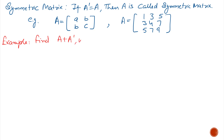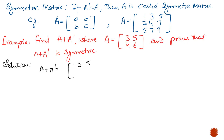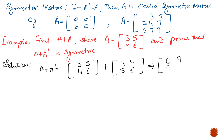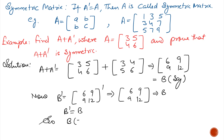Example: Find A plus Aᵀ where A is the 2×2 matrix 3, 5, 4, 6, and also prove that A plus Aᵀ is a symmetric matrix. A is 3, 5, 4, 6 and Aᵀ is 3, 4, 5, 6. Adding them gives 6, 9, 9, 12. Calling this matrix B, we find that Bᵀ equals B. So B, which equals A plus Aᵀ, is a symmetric matrix.